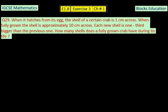In the last equation of this exercise 3, which is 29, it says: when it hatches from its egg, the shell of a certain crab is one centimeter across. When fully grown the shell is approximately 10 centimeters across. Each new shell is one third bigger than the previous one. How many shells does a fully grown crab have during its lifetime? One thing is sure: it is starting from 1 and the last value is 10.